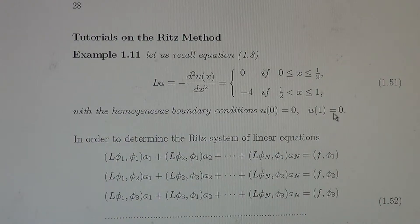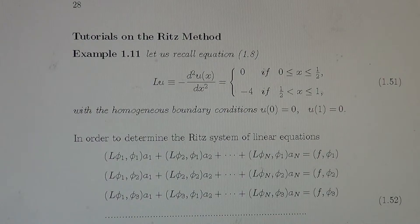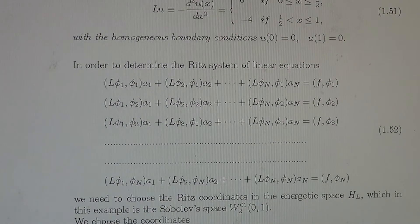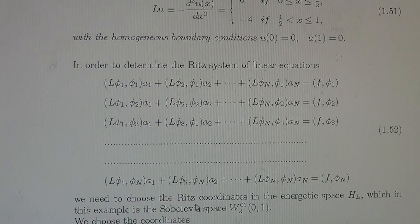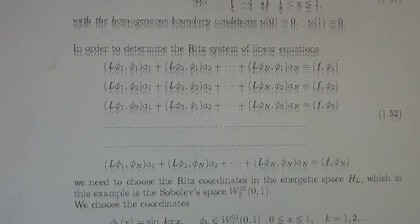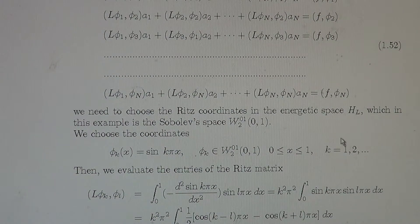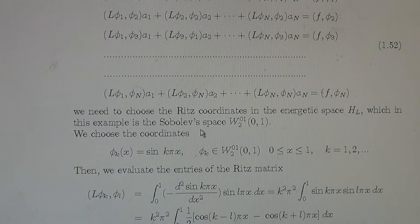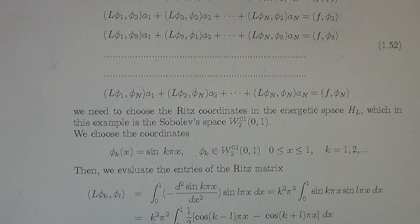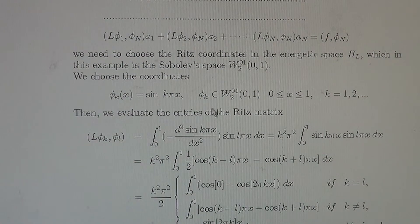u at 1 equals 0 again. In order to determine the Ritz system of equations, we need to choose the Ritz coordinates in the energetic space HL, which in this very example is the Sobolev space W0, 1, 2 on 0, 1 interval.